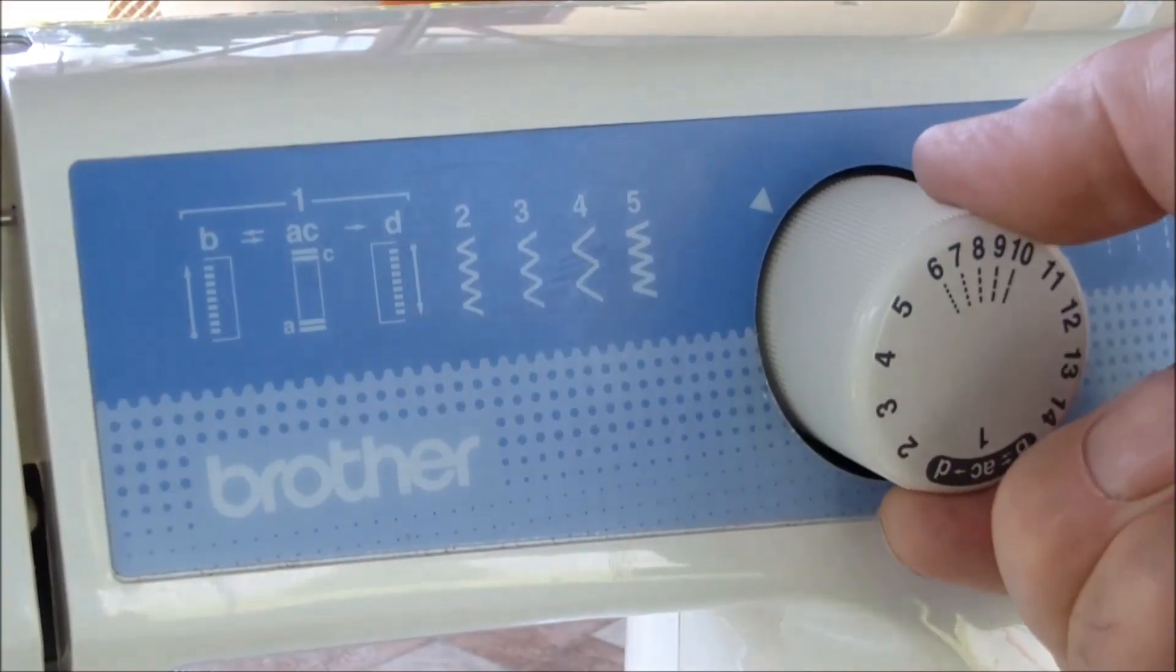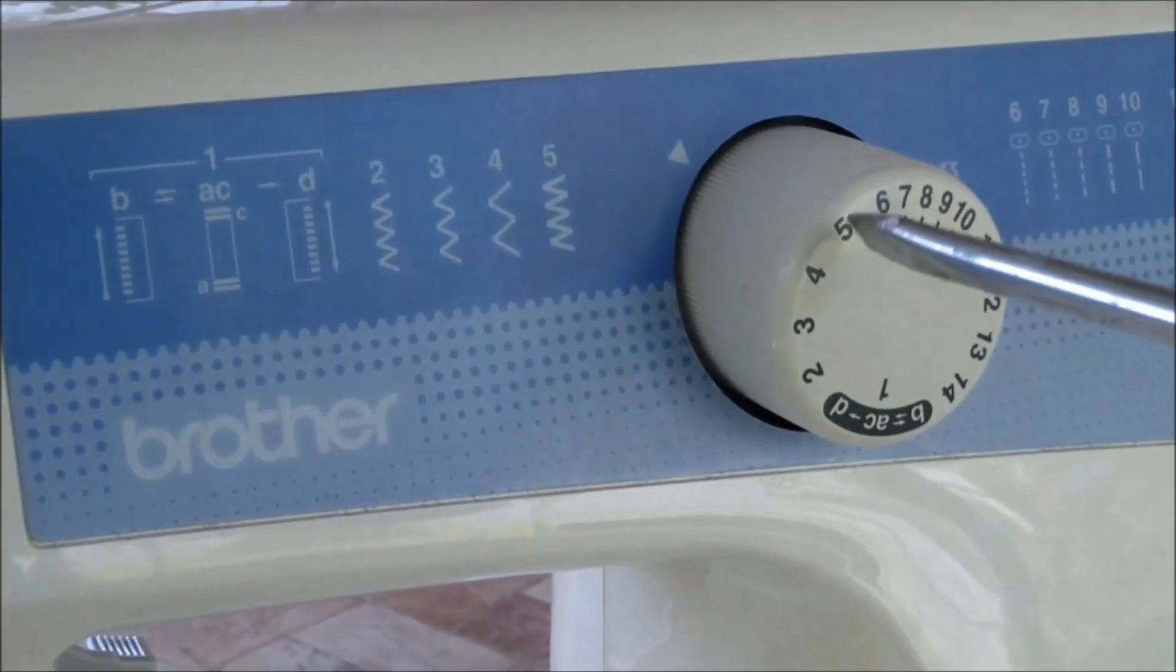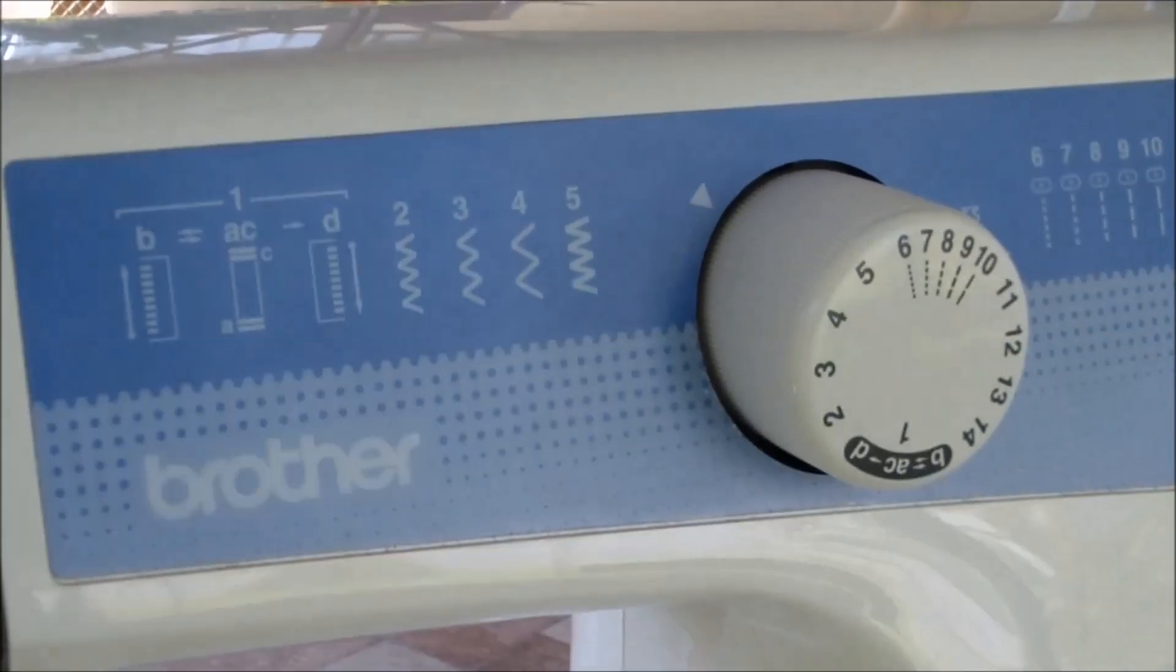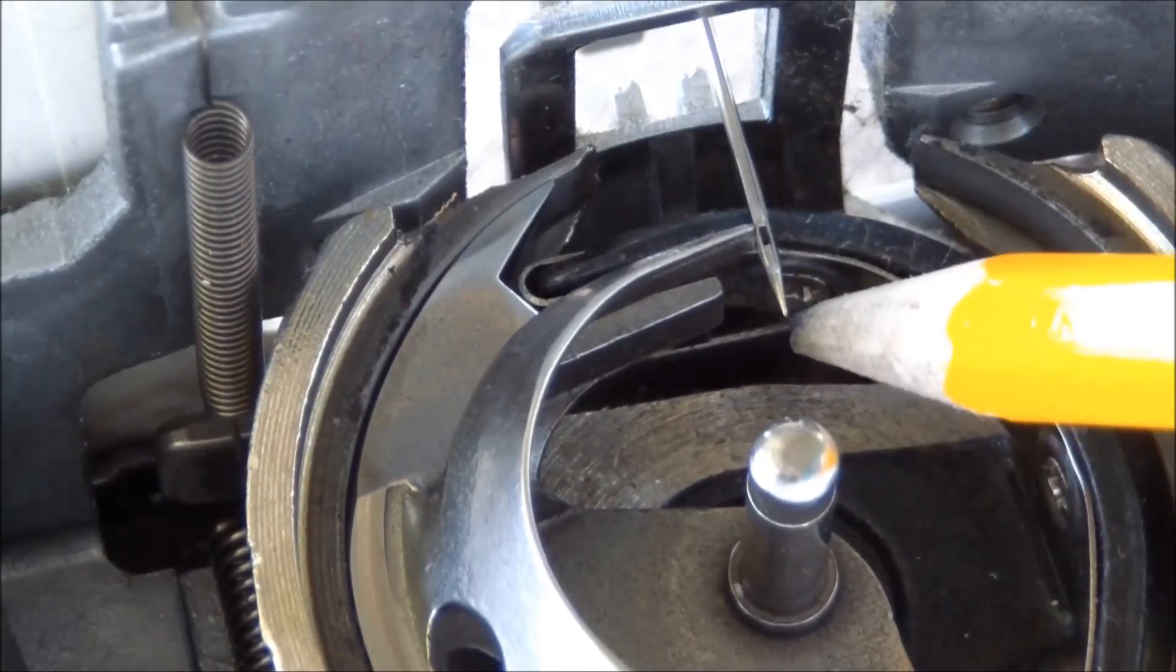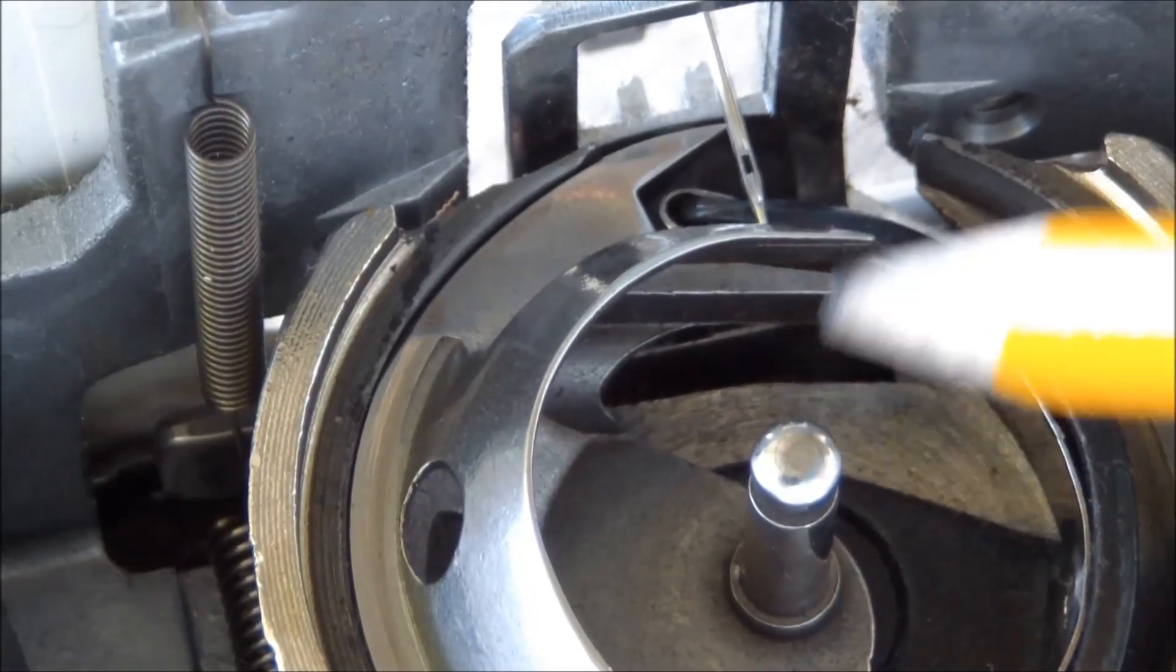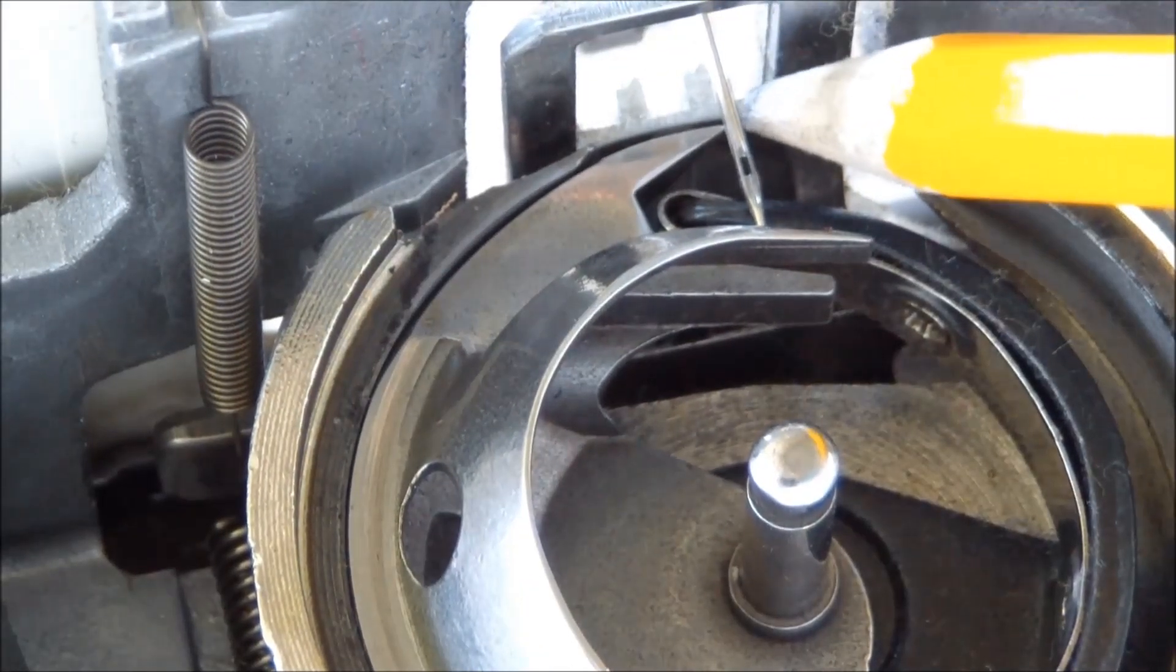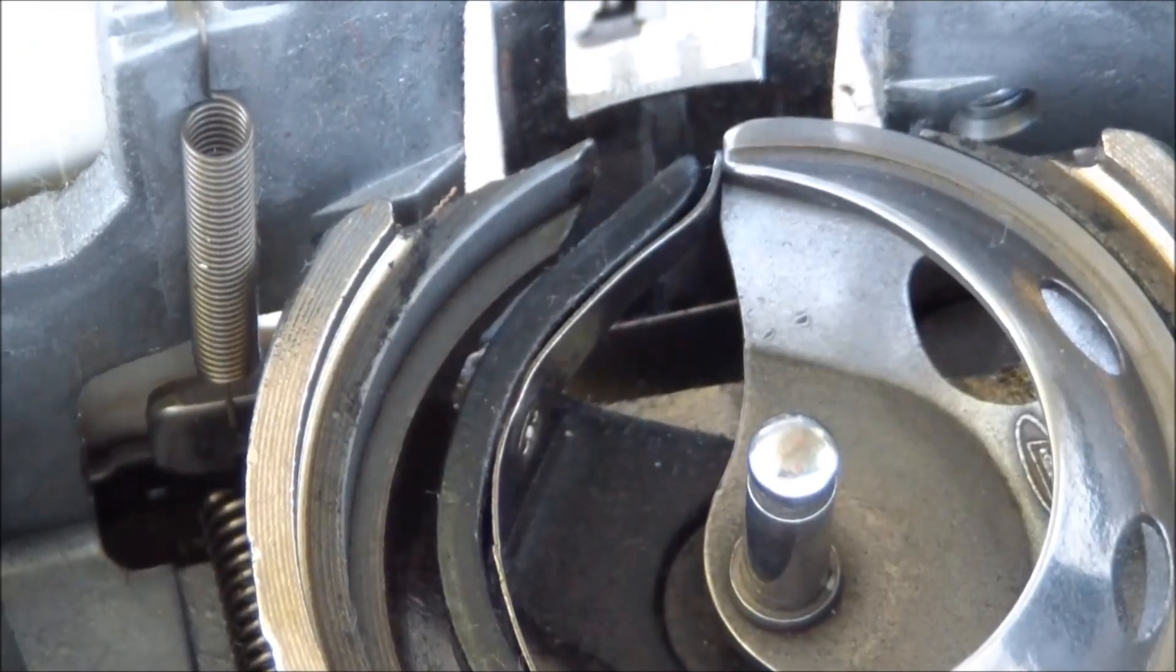In addition, the position of the hook point in relation to the needle eye should be checked. Adjust the position of the needle relative to the hook at maximum zigzag width. If your sewing machine does not have a zigzag, set the needle so that the point of the hook is 1.2 mm higher above the eye of the needle.